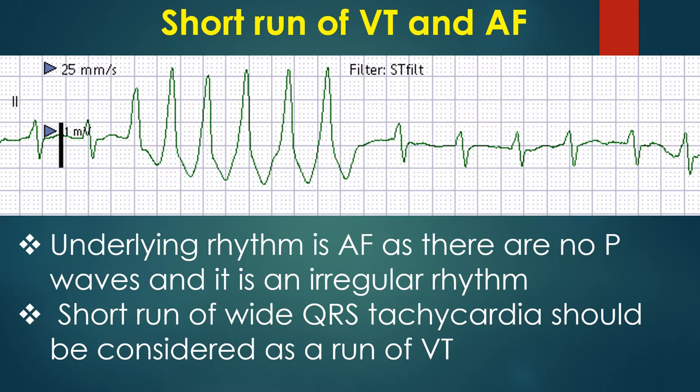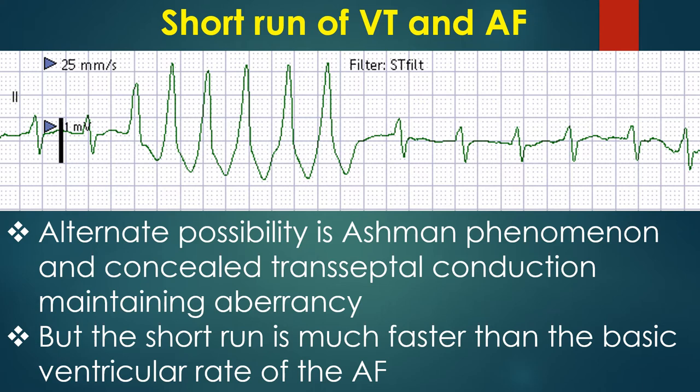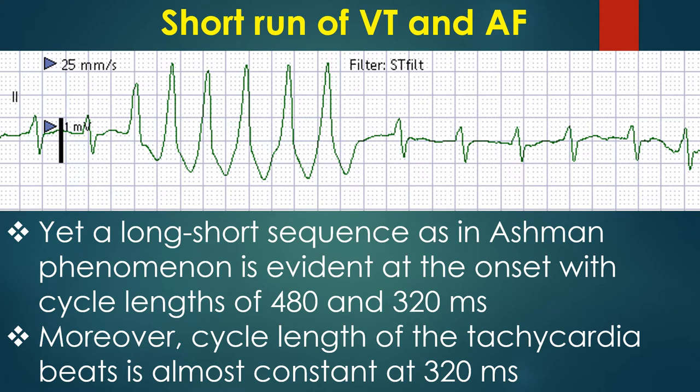Discussion on short run of ventricular tachycardia and atrial fibrillation. The underlying rhythm is atrial fibrillation as there are no P waves and it is an irregular rhythm. A short run of wide QRS tachycardia should be considered as a run of ventricular tachycardia. An alternate possibility is Ashman phenomenon and concealed transeptal conduction maintaining aberrancy, but the short run is much faster than the basic ventricular rate of the atrial fibrillation.